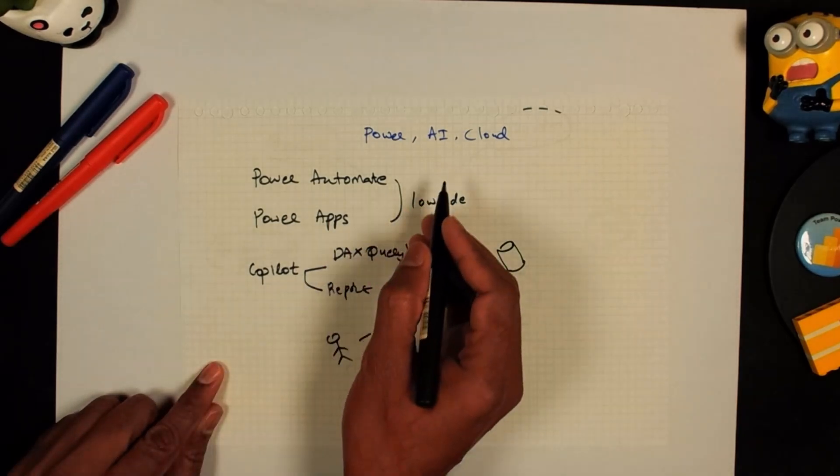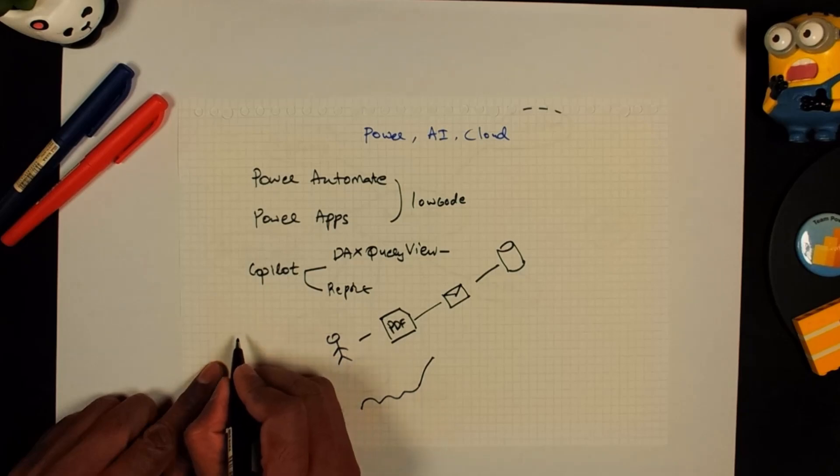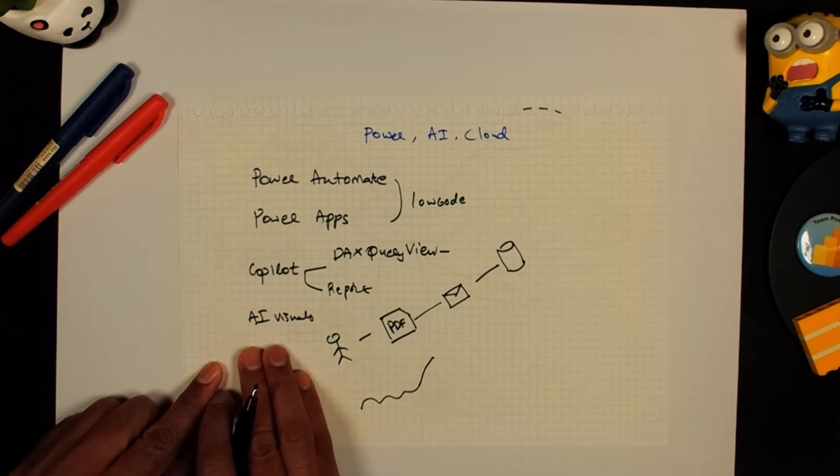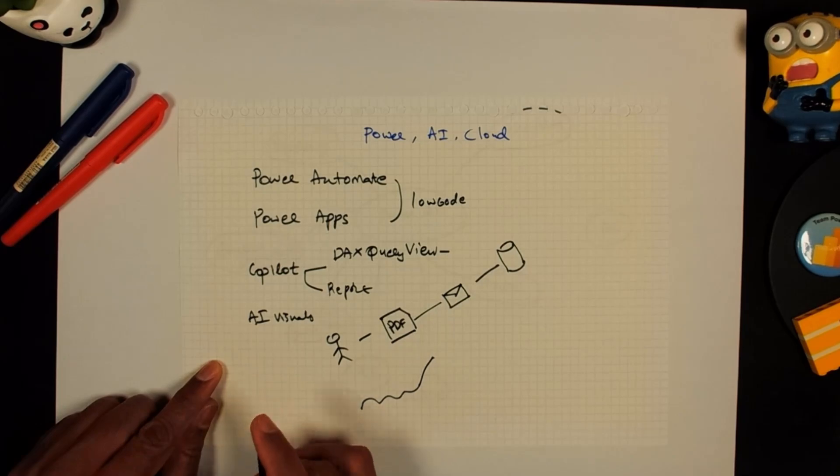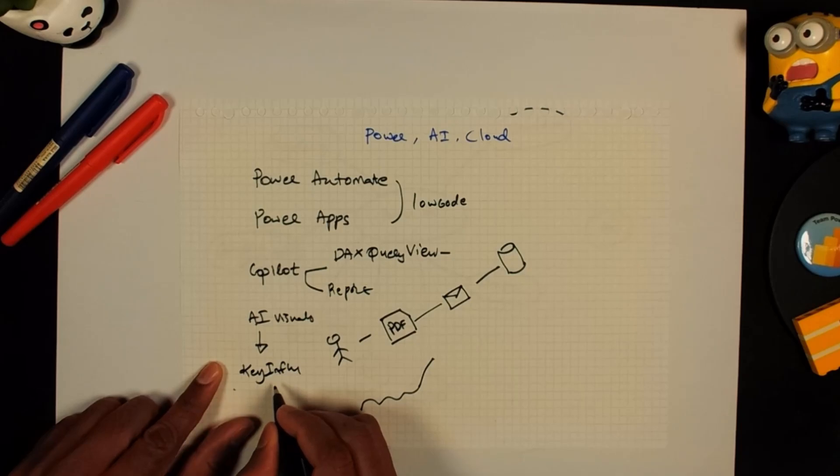Apart from Copilot, there are also some other AI features that are baked into Power BI. One of my favorite is AI visuals. These are special kinds of visuals or graphs that use artificial intelligence machine learning algorithms to understand and explain your data better. For example, there is a visual called key influencers and what that does is it looks at a metric or information and then it understands what is influencing that.